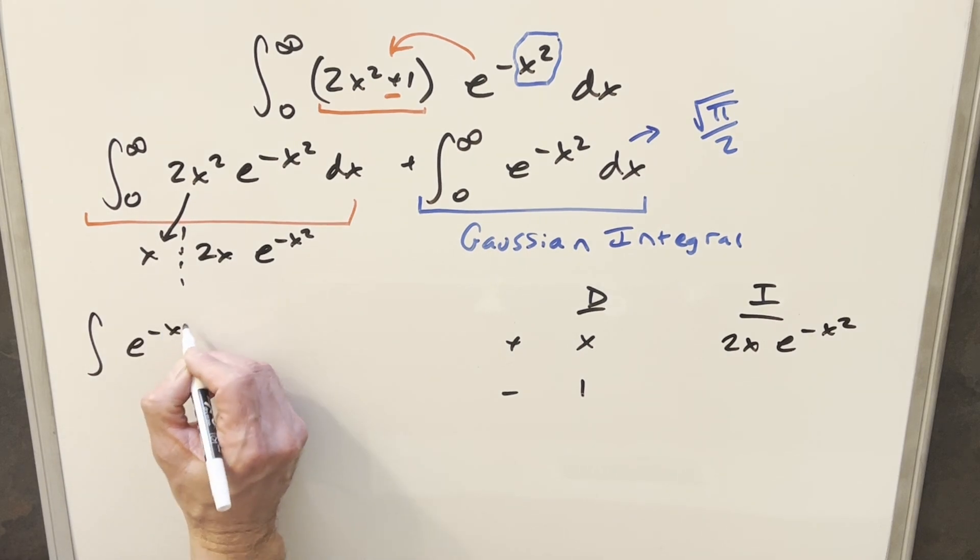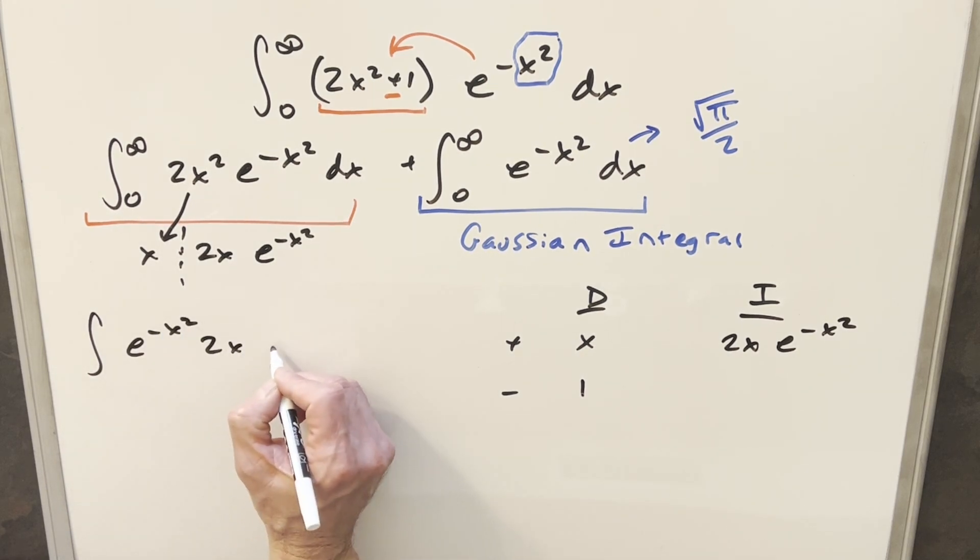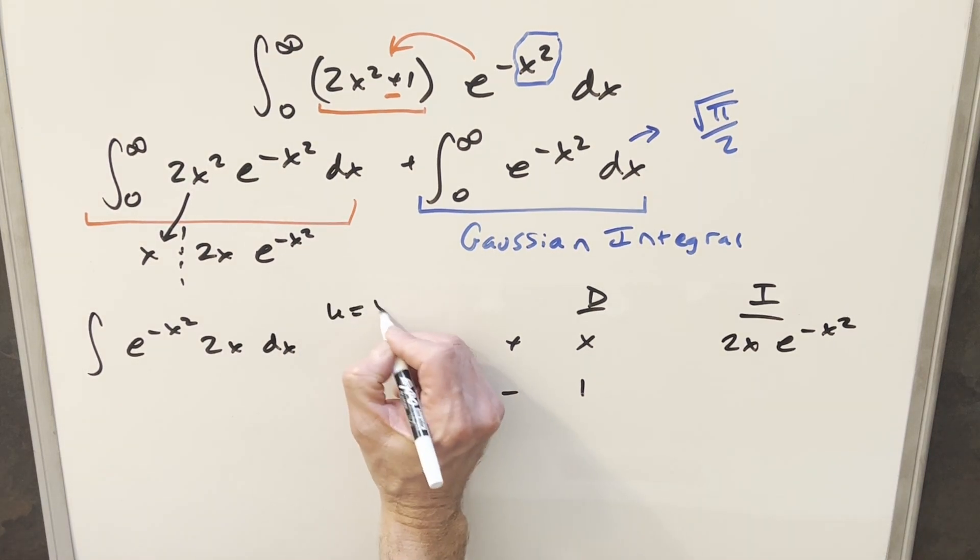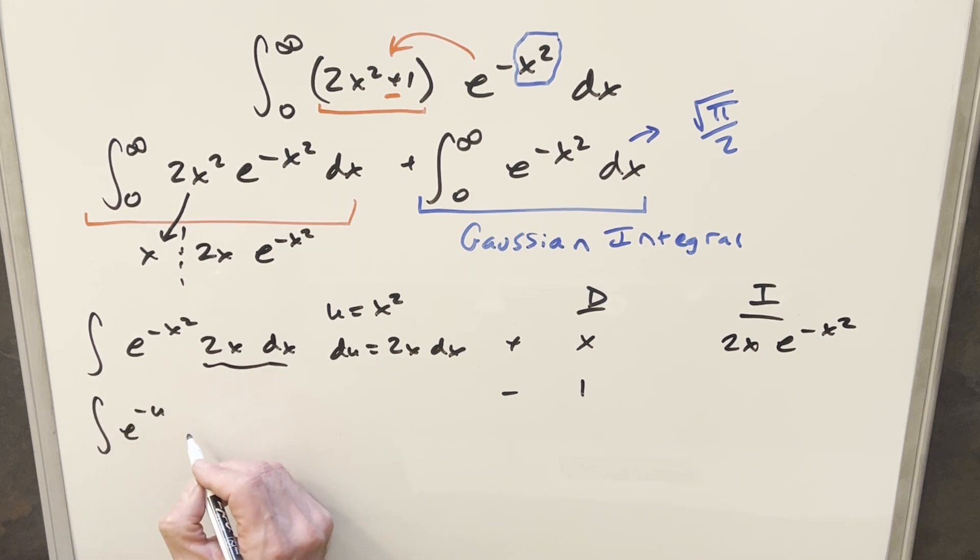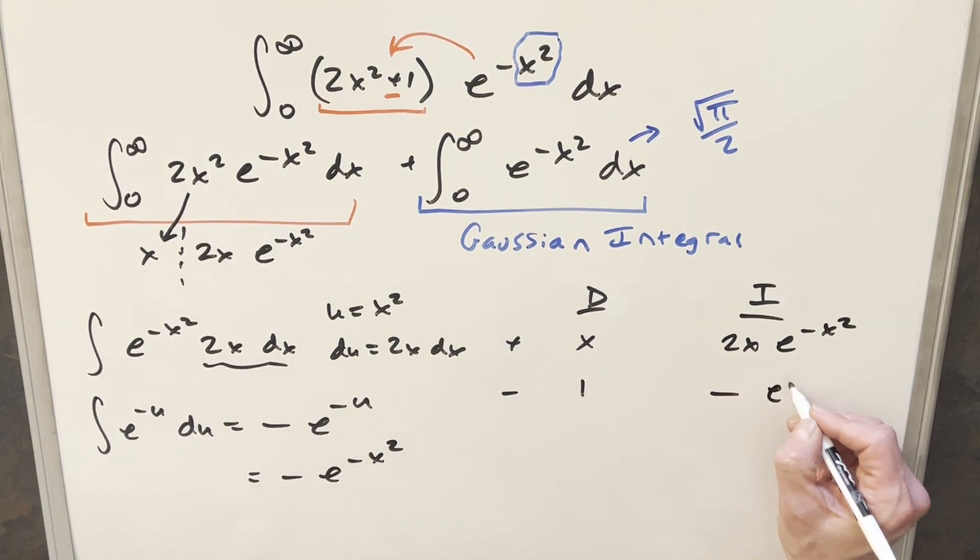So what I'll do is I'll write it as e minus x squared 2x dx. And then I'll do a u substitution. We'll say u is x squared, then take a derivative, du is going to be 2x dx. So we have the du right there. So this is going to become e to the minus u du. Integrating this is going to give me just minus e minus u. But u is x squared, so this whole thing is going to be minus e minus x squared. And so we'll just use that value to fill in our table.